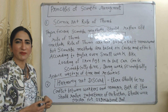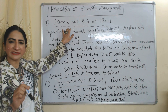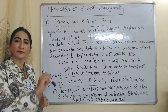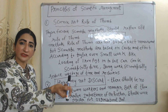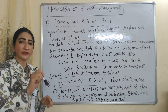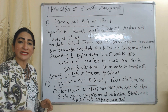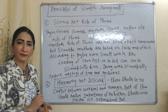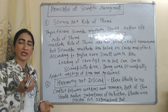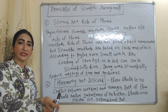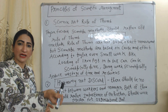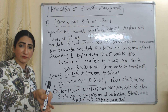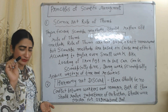Now the principles of scientific management. First principle: science, not rule of thumb. Taylor focused that scientific methods should replace the old rule of thumb, because rules of thumb are not based on exact measurement, but scientific methods are based on cause and effect. According to Taylor, even small tasks like loading iron pigs into a boxcar can be done scientifically, and doing tasks scientifically can reduce time and waste of resources.